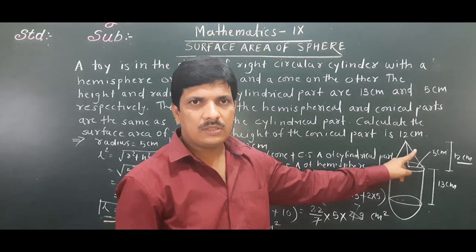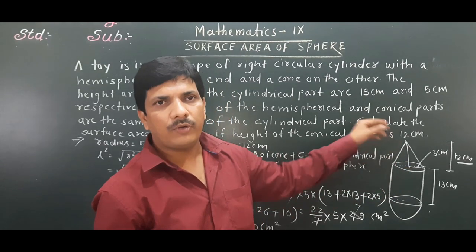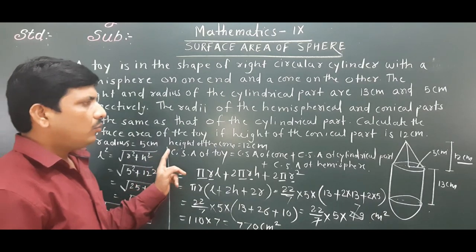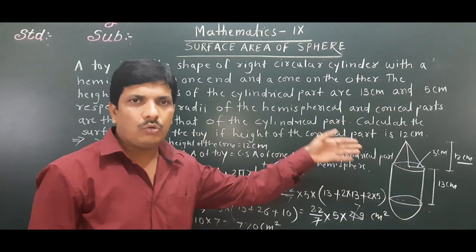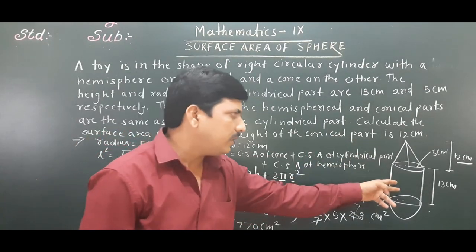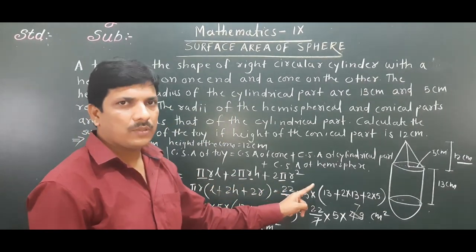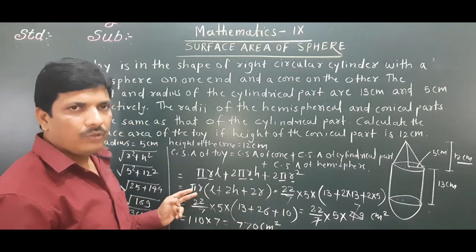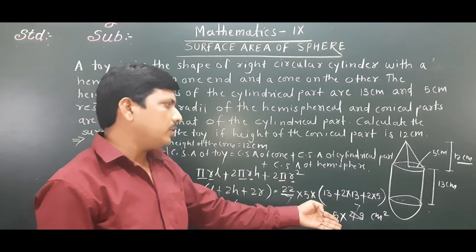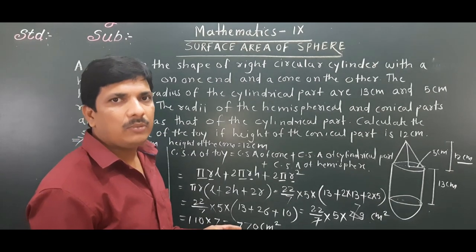To summarize: find slant height of the cone first. Then total surface area = CSA of cone + CSA of cylinder + CSA of hemisphere = πr(l + 2h + 2r). Substituting all values gives 770 cm².